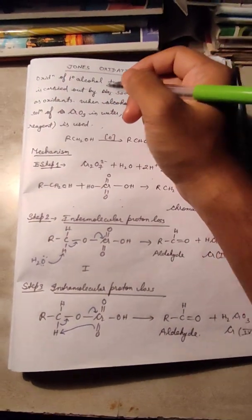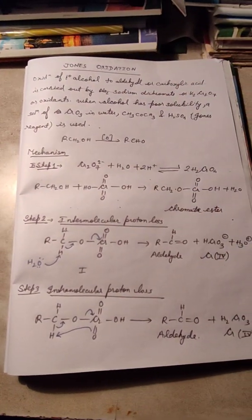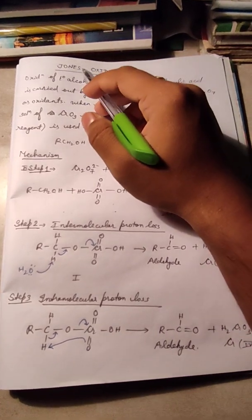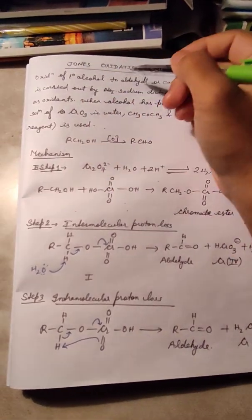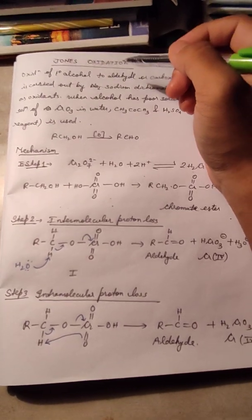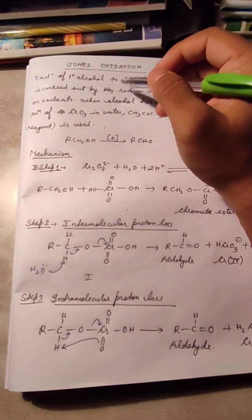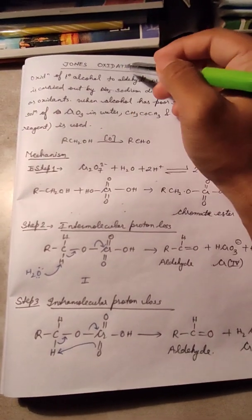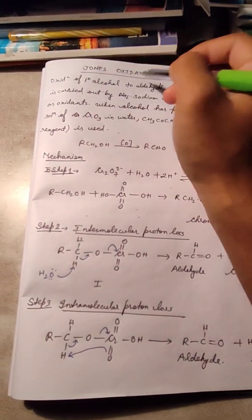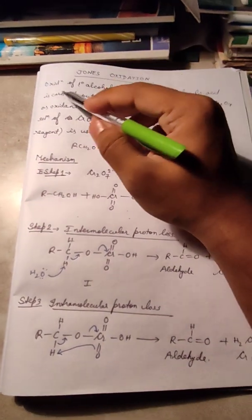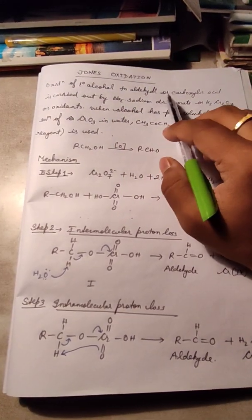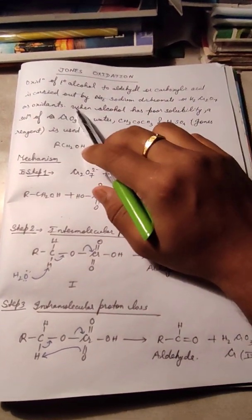Good evening friends. Today I am going to discuss about the alphabet J. In the last video I discussed about the alphabet I — the iodoform test. So in this video I am going to discuss about Jones oxidation. Jones oxidation means oxidation of primary alcohol to aldehyde or carboxylic acid.